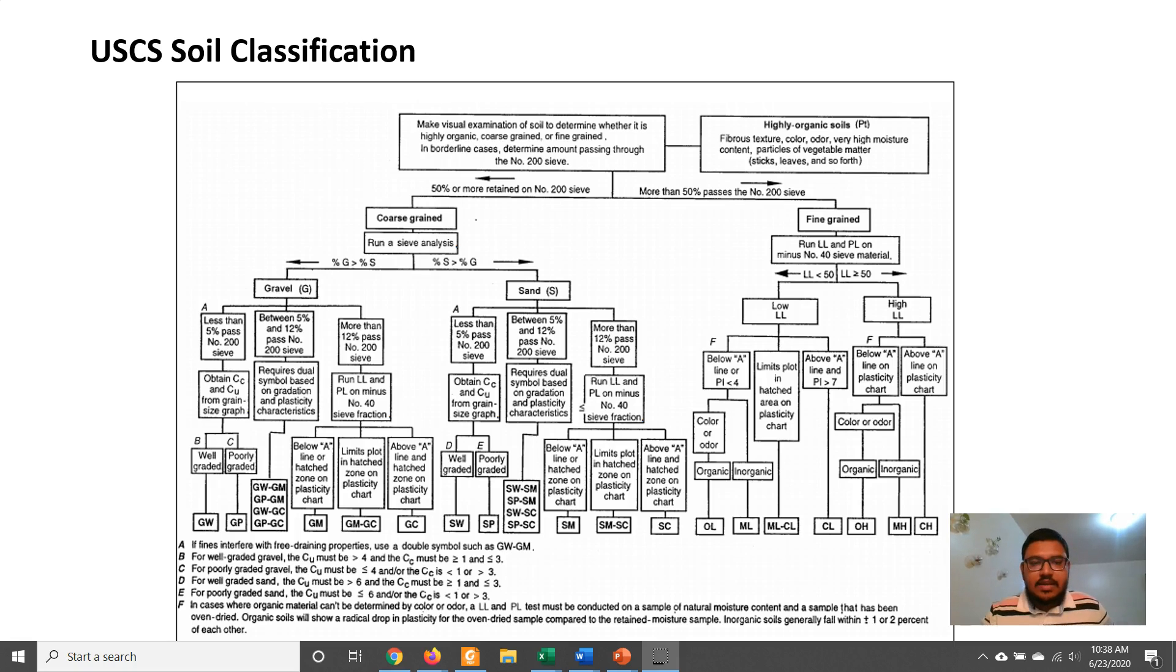This is the USCS classification chart. If the soil is coarse-grained soil, then the soil can be classified with the help of sieve analysis data only. Depending on the sieve analysis data, the two major classifications are gravel and sand.